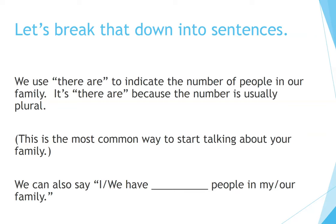Let's break that down into sentences. We use 'there are' to indicate the number of people in our family. It's 'there are' because the number is usually plural. This is the most common way to start talking about your family. We can also say 'I or we have five people in our family.'